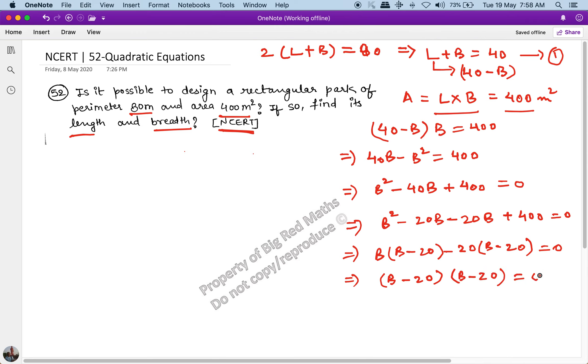This tells you that the value of B equals 20. Whether you equate this part to 0 or that part to 0, you're getting the same value, B equals 20. We initially started with L equals 40 minus B.